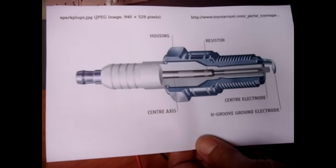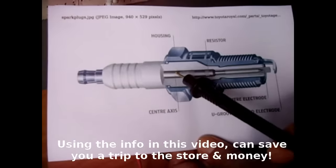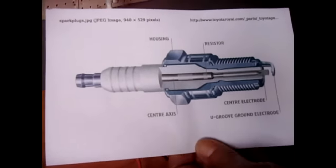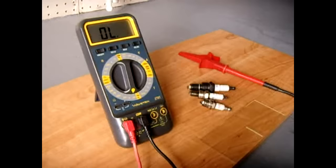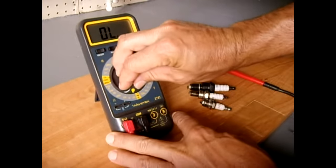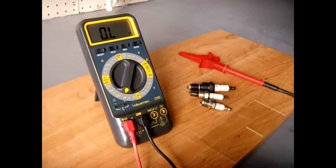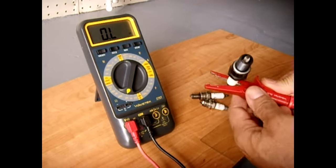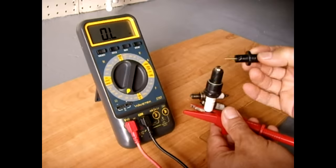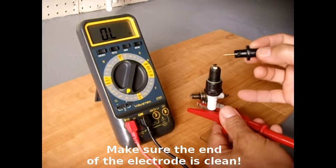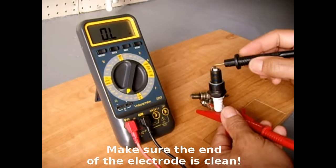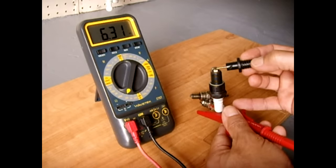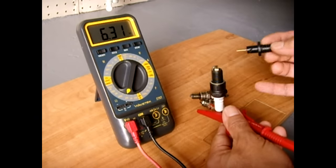Now, once you've verified that the spark plug, if it has a built-in resistor, has the range between 4,000 and 6,000 ohms, which I'm going to show you right now on this one, set the digital multimeter to the 10 or 20K setting. Let's put one end on there and just carefully touch it. Now, you don't want to touch it to the end here. You want to touch it to the electrode itself. And you can see we're at 6,300 ohms. So that's good.